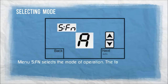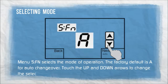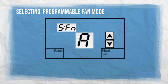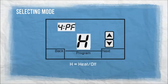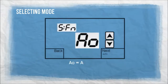Menu 5FN selects the mode of operation. The factory default is A for auto-changeover. Touch the up and down arrows to change the selection. Minus: manual changeover — heat, cool, auto, off. A: auto-changeover. H: heat, off. C: cool, off. AO: auto, off.